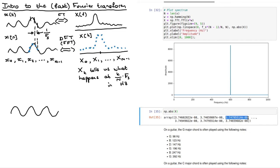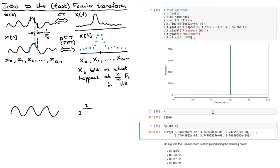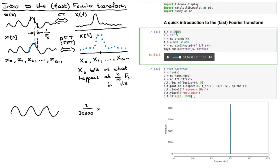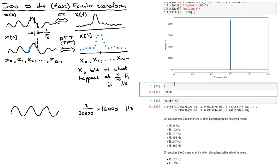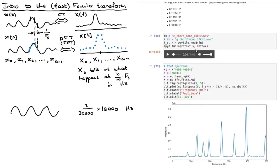This is sample number two, so that tells me what's happening at two divided by the number of points N — which is 32,000 — times the sampling frequency of 16,000 Hz. Now let's actually look at a real signal. The signal I'm going to play for you is a C major chord on guitar.